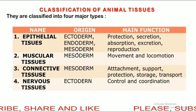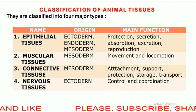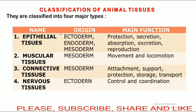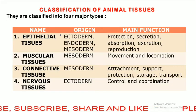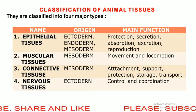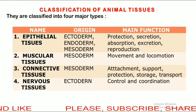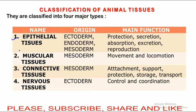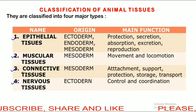Next is the classification of animal tissue. As we know, there are three germ layers and different parts of the body are originated from these three germ layers. These three germ layers are ectoderm, endoderm and mesoderm. Animal tissues are classified into four major types: epithelial tissues, muscular tissues, connective tissues and nervous tissue.